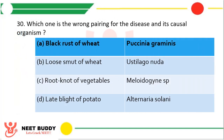Question number 30. Which one of the following is the wrong pairing of a disease and its causal organism? The correct answer is option D. Late blight of potato is not caused by Alternaria solani.